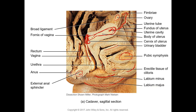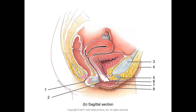Moving on to the next figure — a model of the sagittal section focusing on the external genitalia. Number three is the pubic symphysis, number four is the mons pubis, number five is the clitoris, number six is the external urethral orifice, number seven is the labia minora, number eight is the labia majora, number two is the vaginal orifice, and number one is the anus.